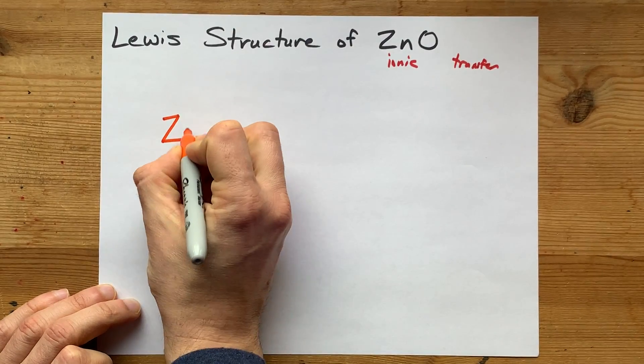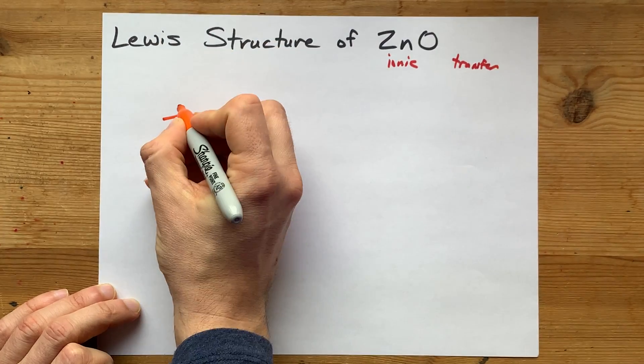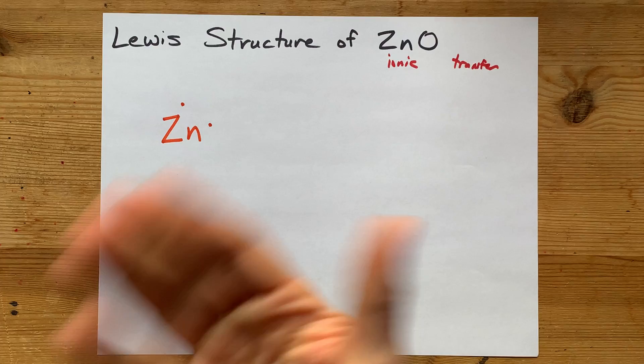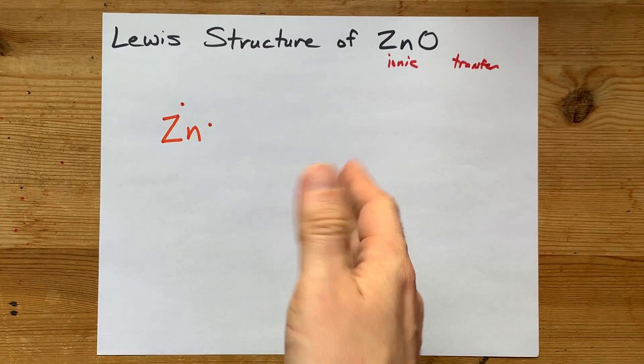So what I want you to do is to draw yourself the zinc with one, two valence electrons around it. Two for the positive two charge that it's going to want.